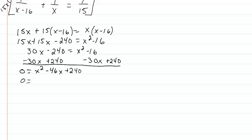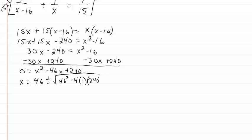We're going to use the quadratic formula. So x equals 46 plus or minus the square root of 46 squared minus 4 times 1 times 240, all over 2 times 1.